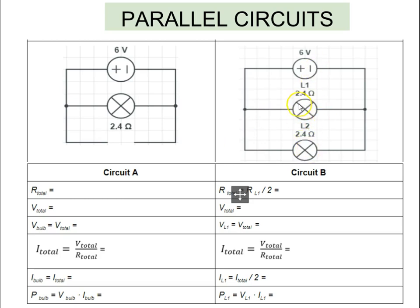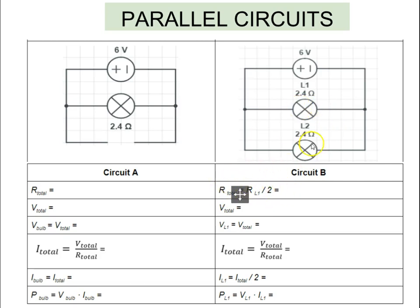Now we have two light bulbs in parallel. That means twice as many electrons, or twice as much current, can flow through this circuit — very different from the series circuit. Because there are two pathways instead of one, it's like opening two doors instead of one, so our resistance is halved. The total resistance equals the resistance of one light bulb divided by two: 2.4 divided by 2 equals 1.2 ohms. Write that down.